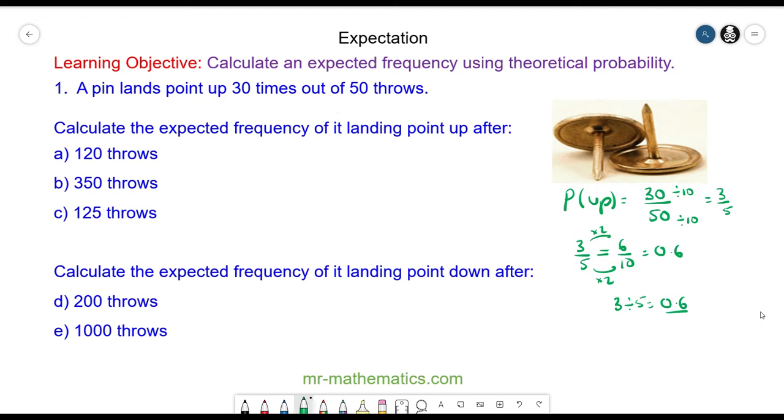Calculate the expected frequency of it landing point up after 120 throws. So three fifths of the 120 throws we know it should land point up. We can write this as 0.6 times 120, which equals 72. So this is our expected frequency. That's not an exact value but it is something we should expect to happen.